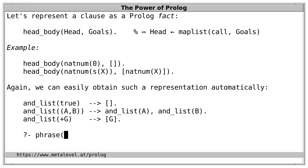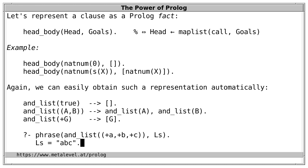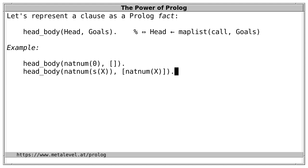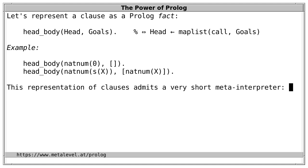We use 'phrase' to invoke the DCG. For example, phrase(and_list(A,B,C), Ls) holds if Ls is a list with three elements A, B, and C. Interestingly, this representation of clauses admits an even shorter meta-interpreter when we reason about lists of goals.